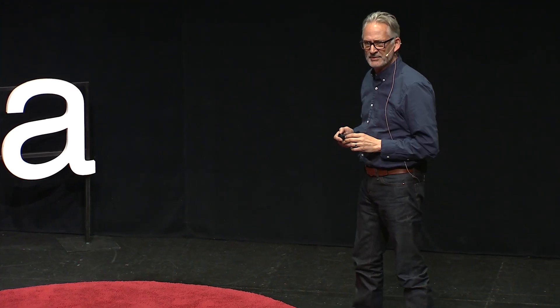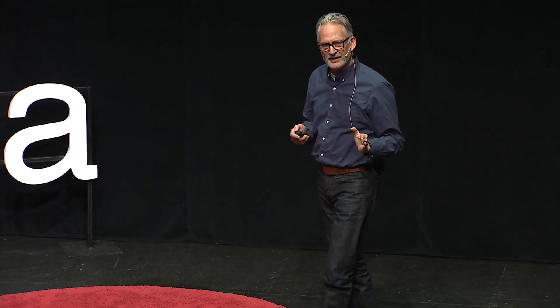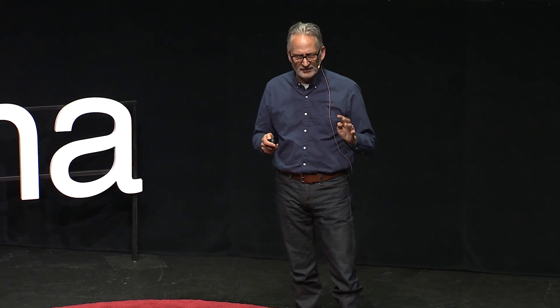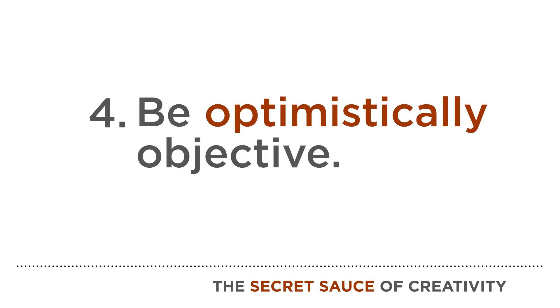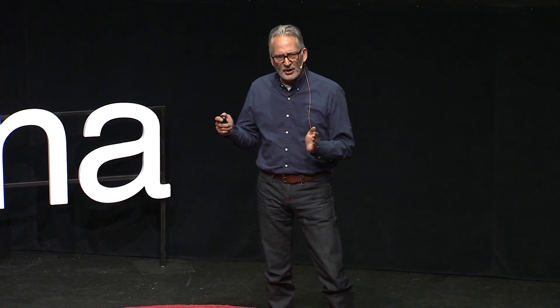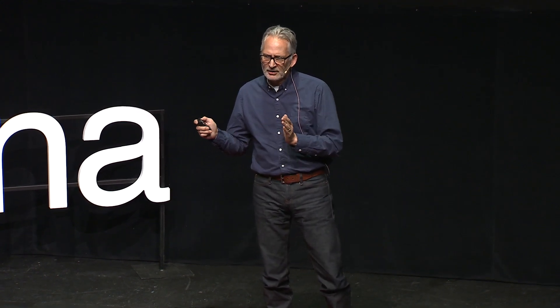He did it with optimism, and that leads us to the fourth thing I've learned: you need to be optimistically objective. You need to look at how a problem might work, not how it might not work. You have to be hopeful and optimistic that that crazy idea — the thing you're going to give consideration to — could actually work.